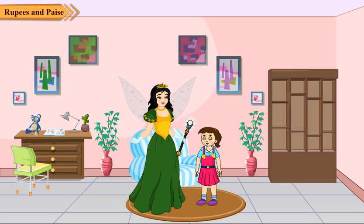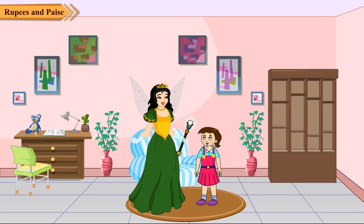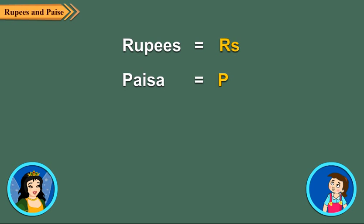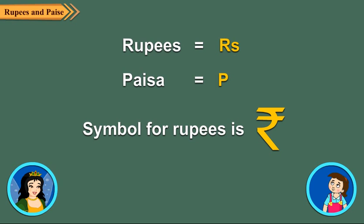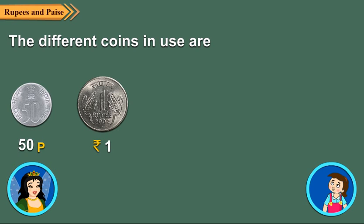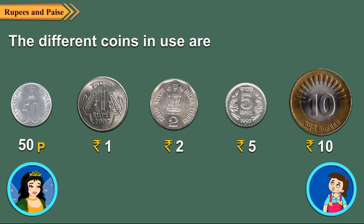We use money to buy things. Indian money is rupees and paise. It is in the form of notes and coins. In short, rupees is written as RS and paise as P. We also have a symbol to denote rupee. The different coins in use are 50 paise, 1 rupee, 2 rupees, 5 rupees, and 10 rupees.